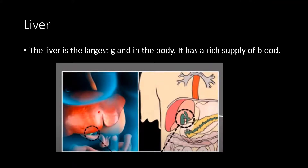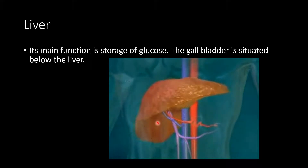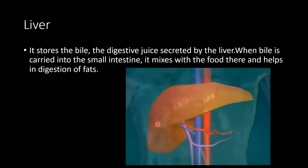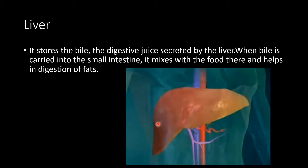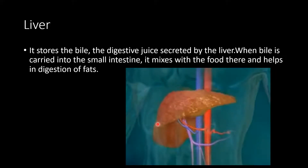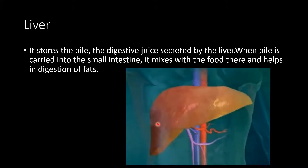The liver is the largest gland in the body and has a rich supply of blood. Its main function is the storage of glucose. The gallbladder is situated below the liver. The liver stores bile, the digestive juice secreted by the liver. Bile is carried into the small intestine, where it mixes with food and helps in the digestion of fats. Bile contains bile salts.